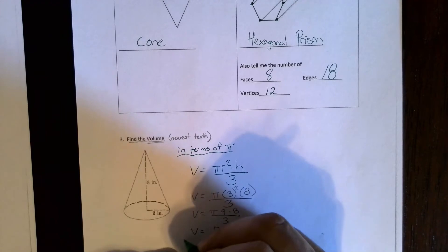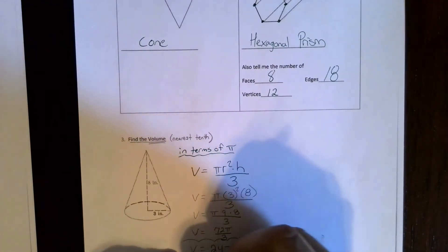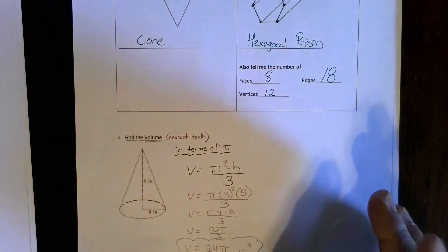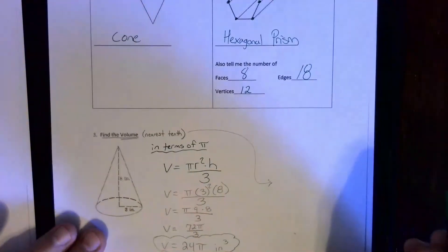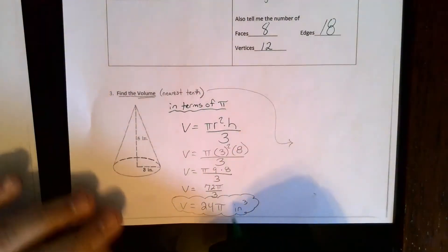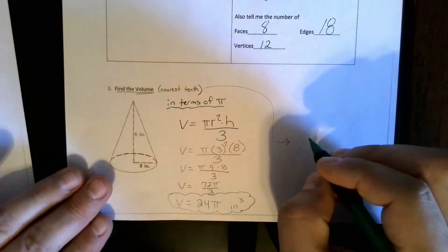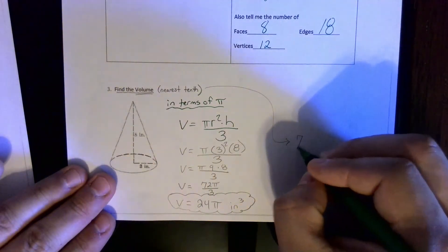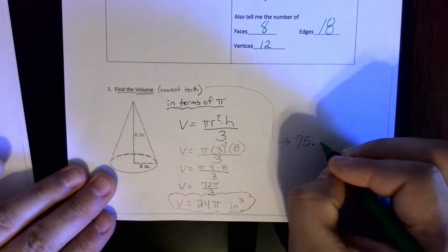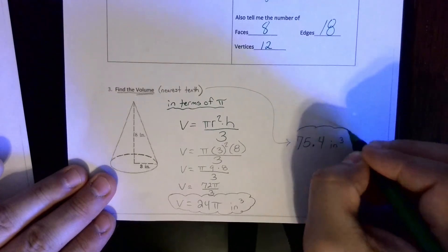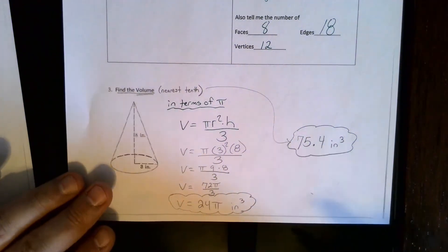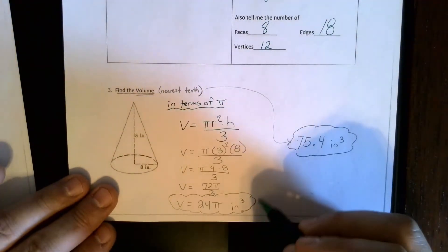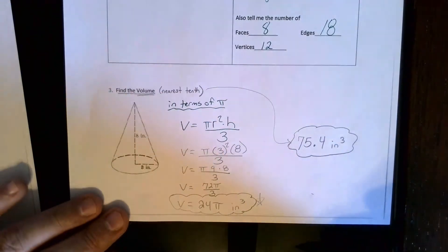Now the answer on the back page was to the nearest tenth, so if you did have your calculator and you went ahead and multiplied that out without pi in your answer, that would be a total of 75.4 cubic inches. To get that, all you would do is 24 times pi. You could do it in terms of pi, that's perfectly fine, or multiply it out, that's fine too.